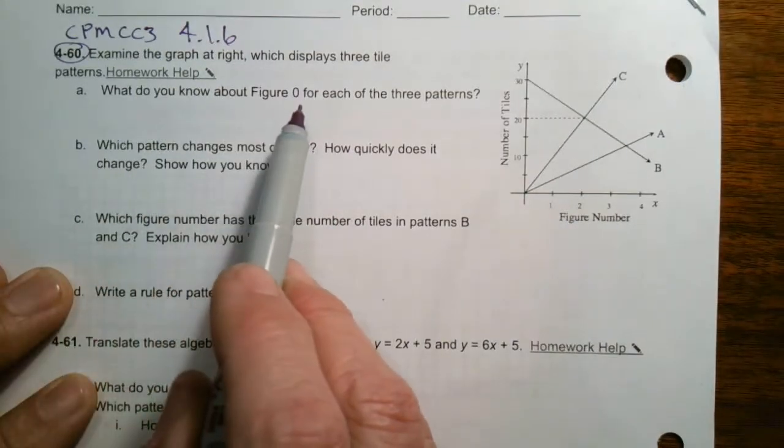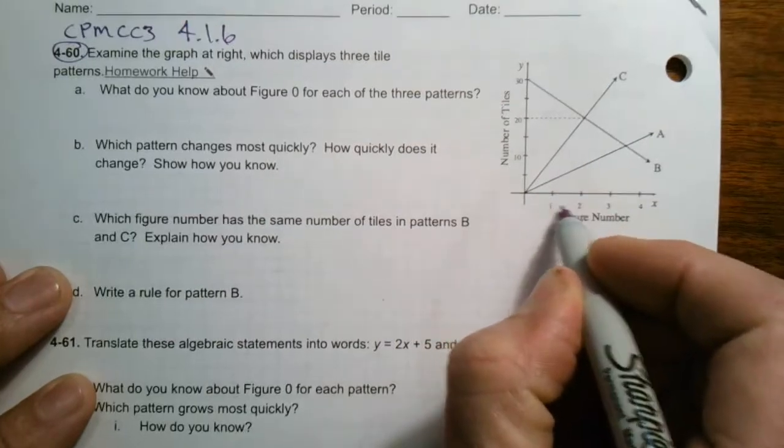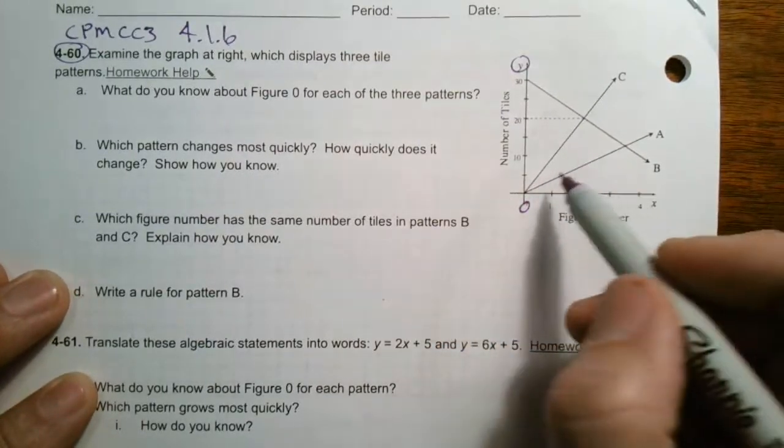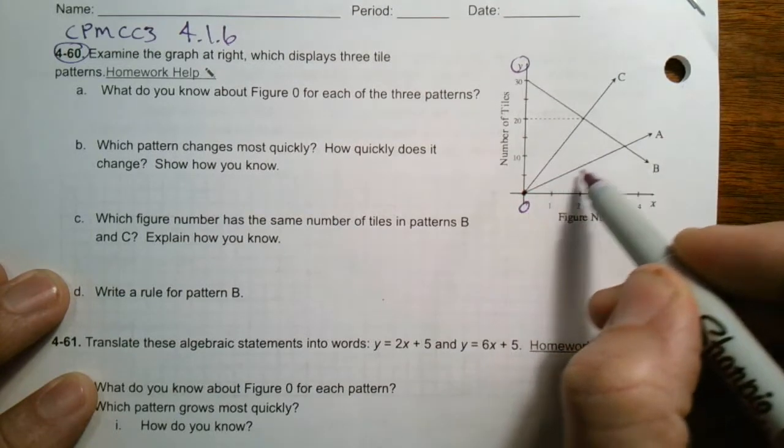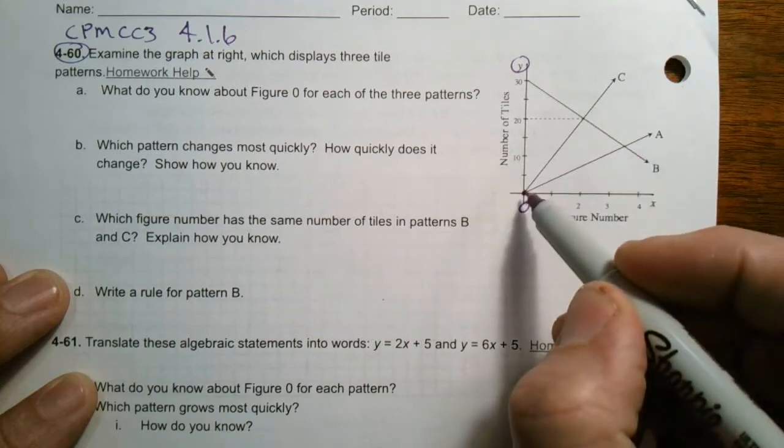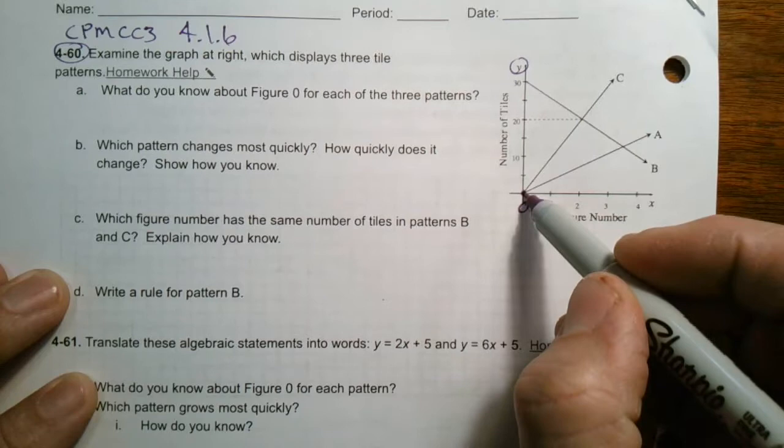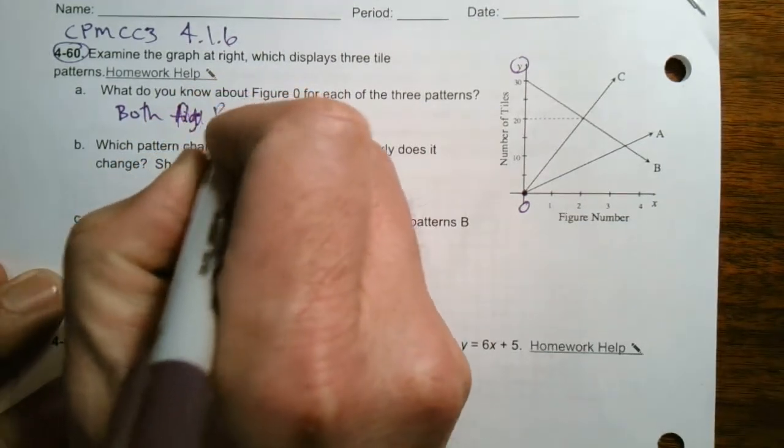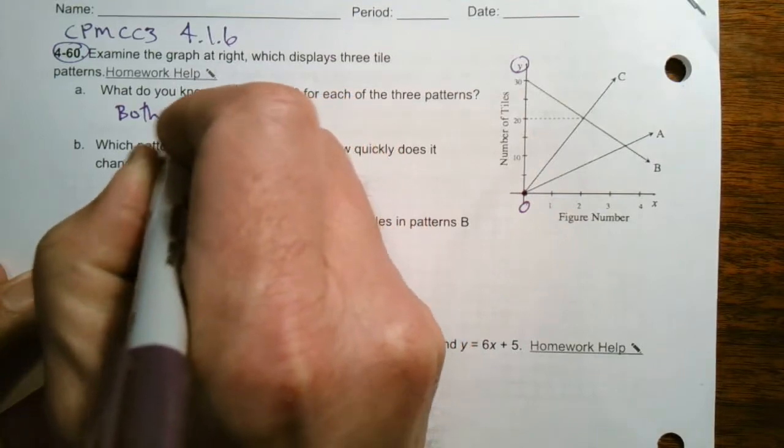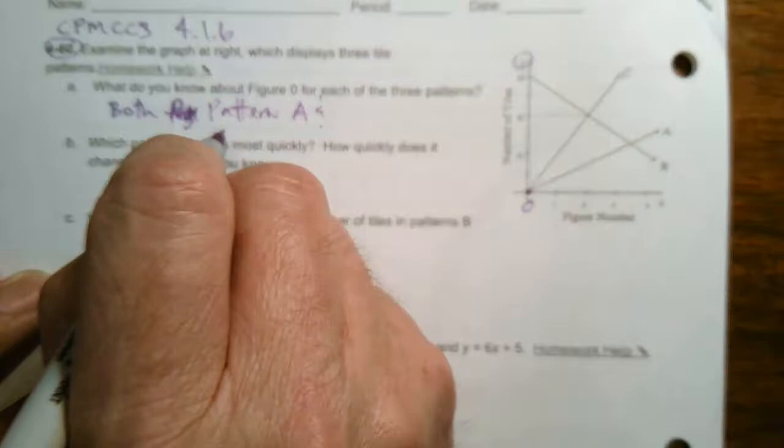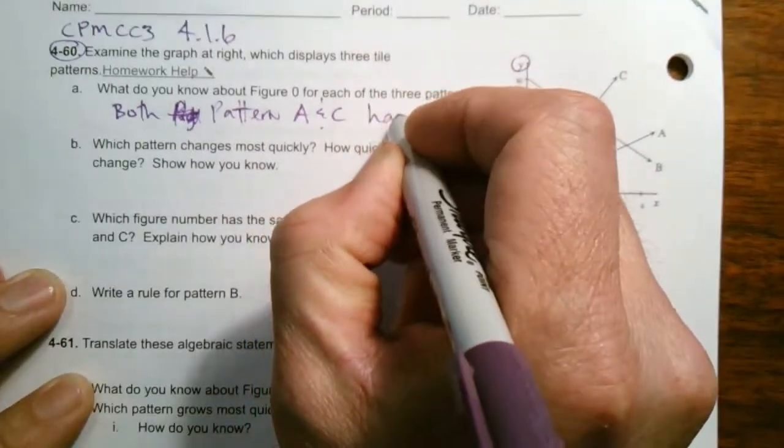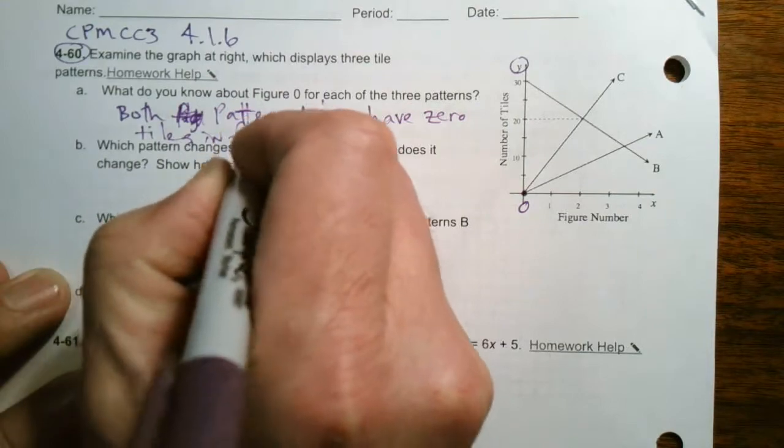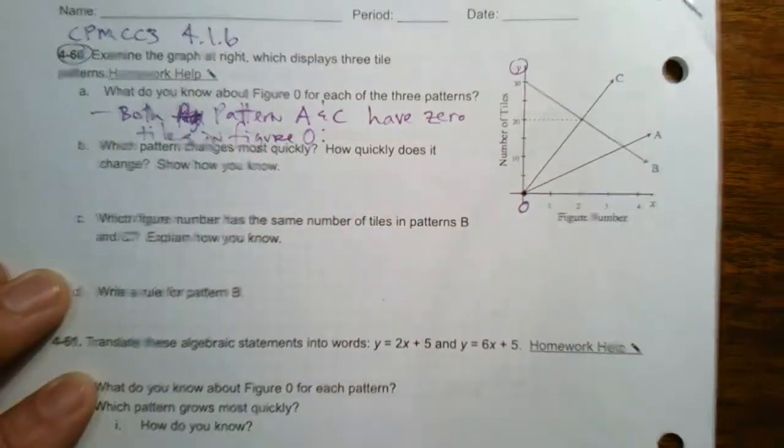So it says, what do you know about figure 0 for each of these patterns? Remember figure 0, if this is figure 1, 2, figure 0 is right here on the Y axis. So that's where figure 0 exists. So if I look, I see that figure 0 for both C and A. Here's line A, here's line C. So for both C and A, figure 0 is at 0, so it has 0 tiles. So we can say both patterns A and C have 0 tiles in figure 0. So there's one piece of information.